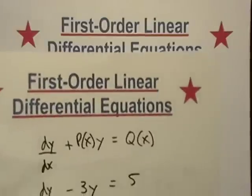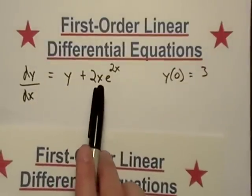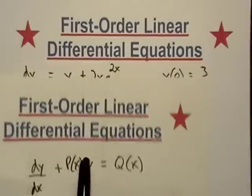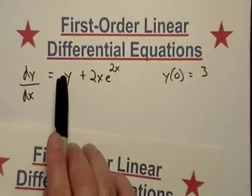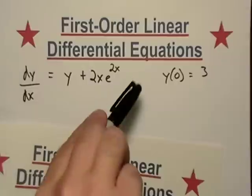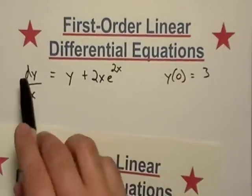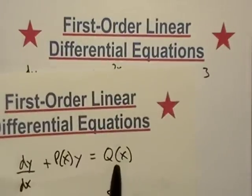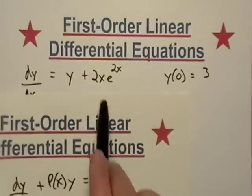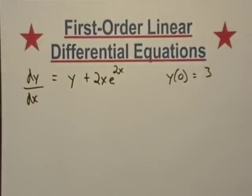And just like normal, I'm looking for this form right here, and it doesn't really look like I have that. See, the function of x would just be 1, and my y is on the right-hand side. So all I really have to do is just subtract it, and then I've got q of x would be my 2xe^(2x). So let's just go ahead and do that.